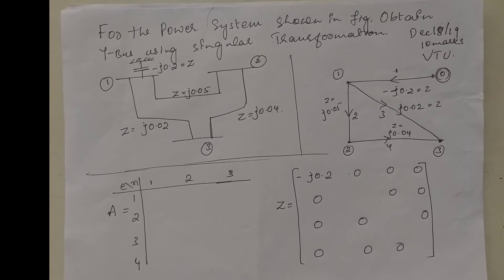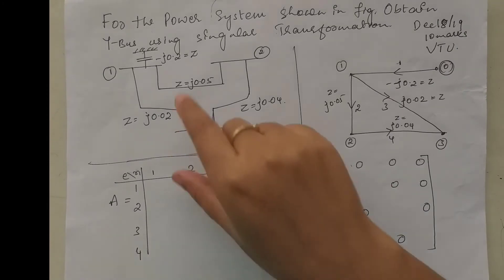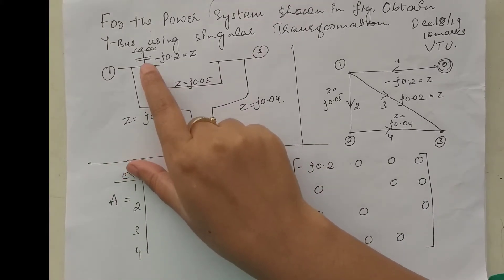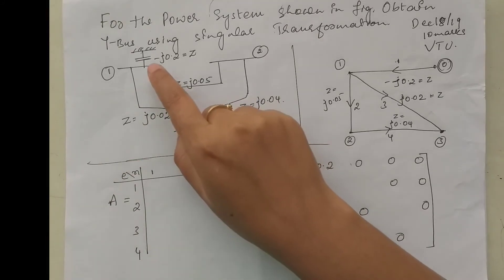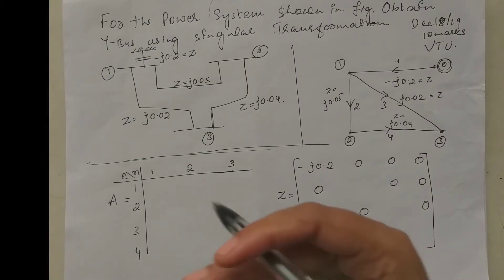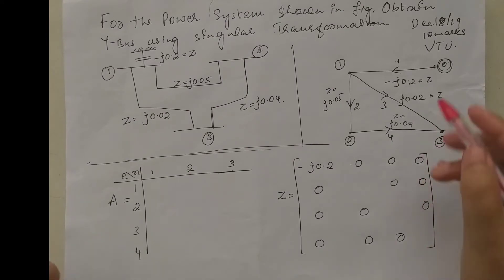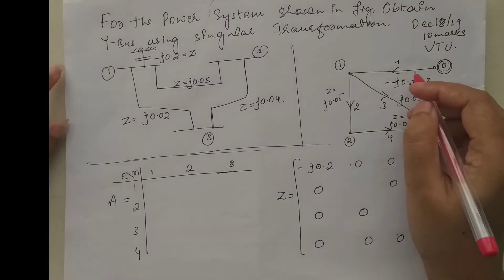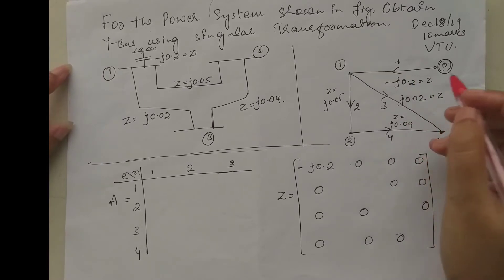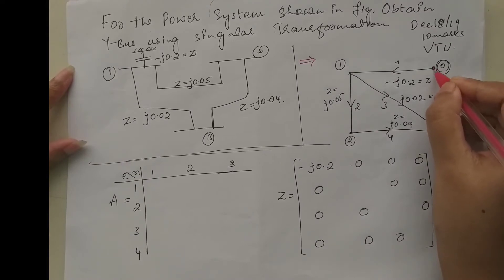The next problem, also asked in a V2 exam paper: for the power system shown in the figure, obtain Y-bus using singular transformation method. In this network, instead of connecting capacitive susceptance below, it is connected upside — again grounded. Here, directions are not mentioned.